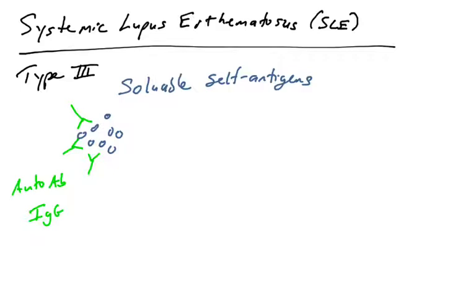In this case, we're talking about soluble self-antigens. And these immune complexes, a combination of antibodies and soluble antigens, tend to lodge in certain parts of the body, causing inflammation and damaging organs and tissues.